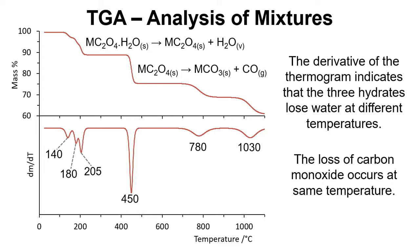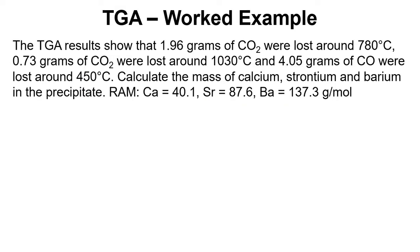Now the TGA results show that 1.96 grams of CO2 were lost around 780, 0.73 grams of CO2 were lost around 1030 degrees and 4.05 grams of CO were lost around 450 degrees. And we need to calculate now the mass of calcium, strontium and barium in the precipitate that was formed in our original experiment.